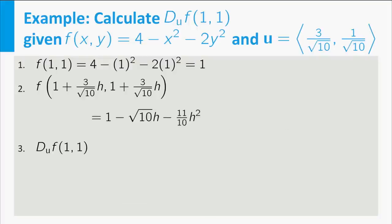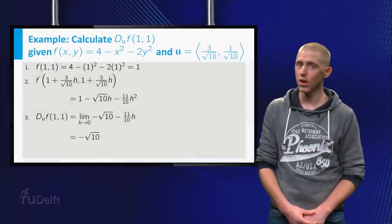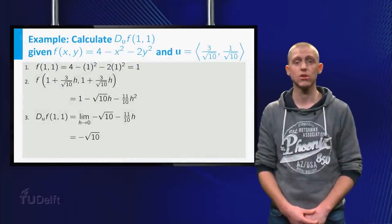Now you can take the limit for h going to 0 of the difference between result 1 and result 2 divided by h. First you simplify as much as possible. Now you know what the limit value is. You can just plug in h now so the limit is minus square root of 10.